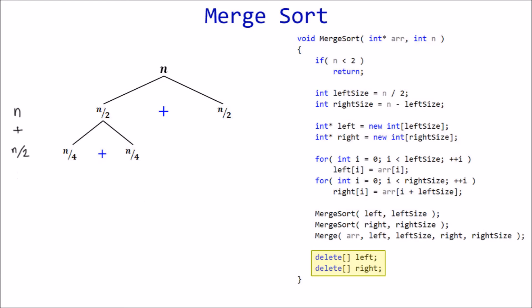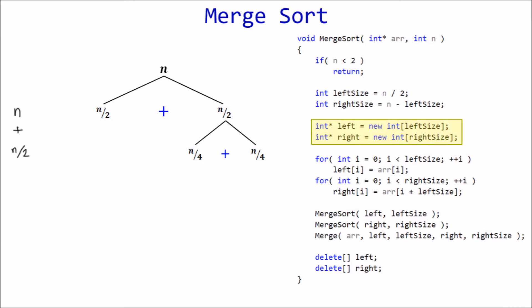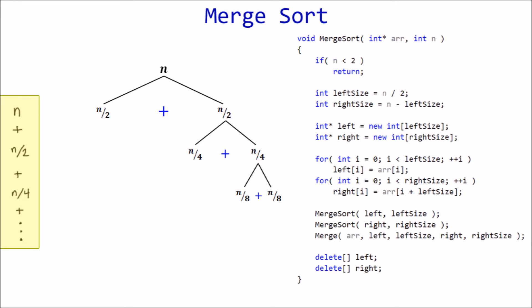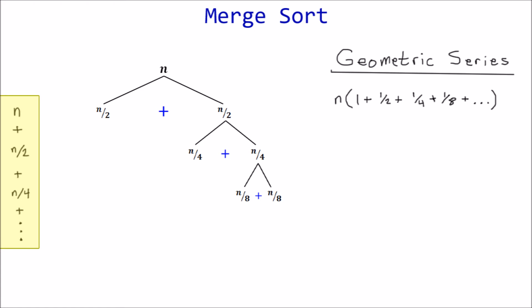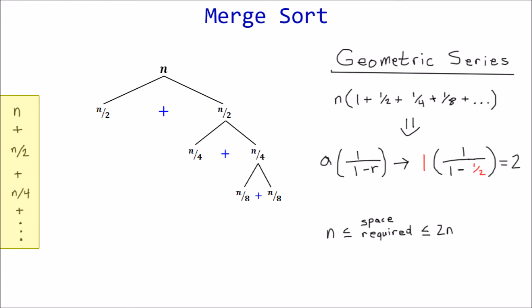Because of this, the maximum amount of space used is equal to the deepest recursion path, not the whole tree. All we need for the space complexity calculation is the series we just discovered. This is known as a geometric series, which comes with its own formula to calculate the sum. Assuming the series is infinite, the sum equals a over (1 minus r), where a is the first term and r is the common ratio. Plugging in one as the first term and one-half as the common ratio, we get two, so the amount of additional space required is somewhere between n and 2n — or O(n).